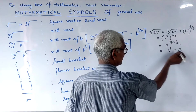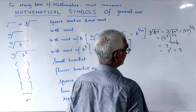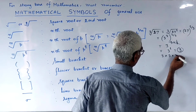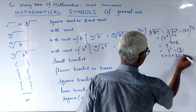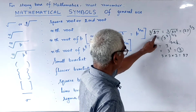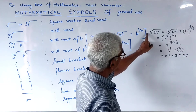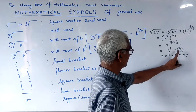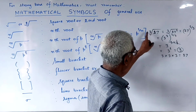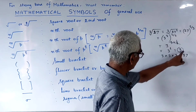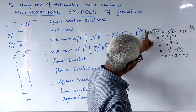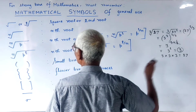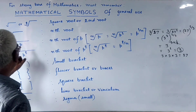The third root of 27 comes to 3. This means three multiplied by itself three times gives 27. So the third root of 27 is 3, because 3 used three times gives 27.